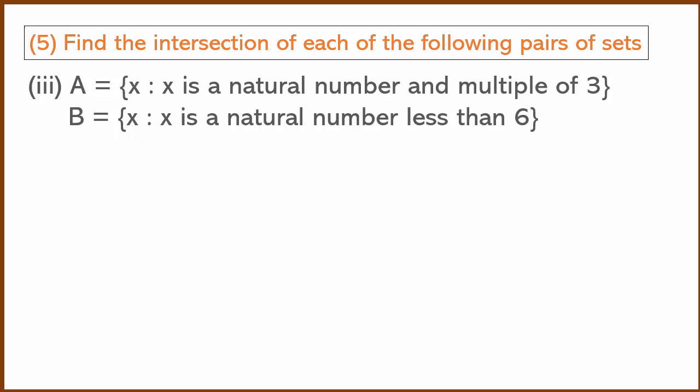Now, A is the set of natural numbers that are multiples of 3: {3, 6, 9, 12, ...}. B is the set of natural numbers less than 6: {1, 2, 3, 4, 5, 6}.